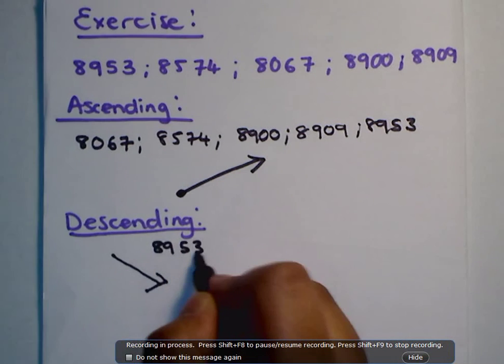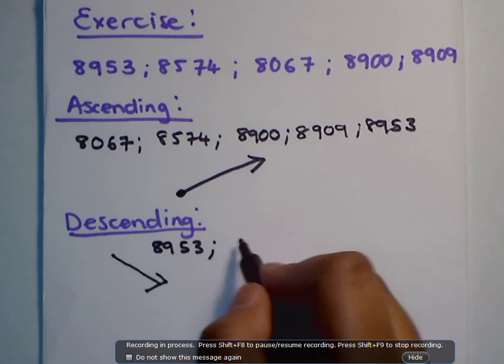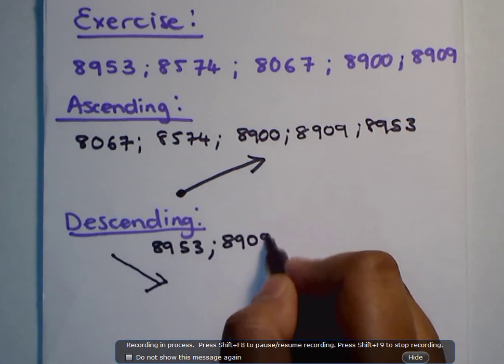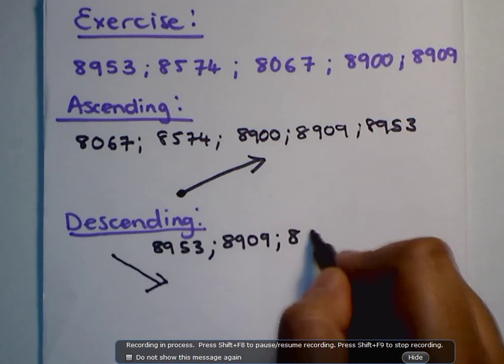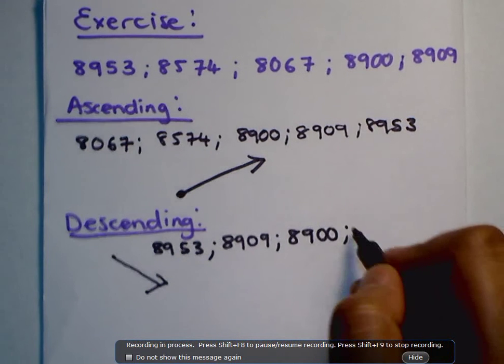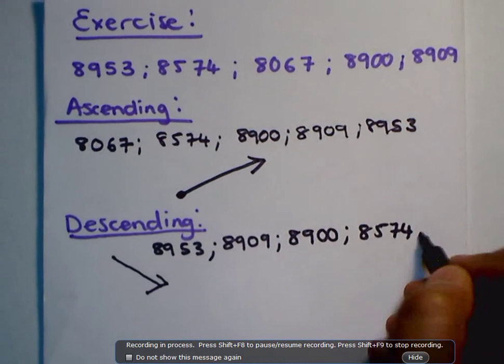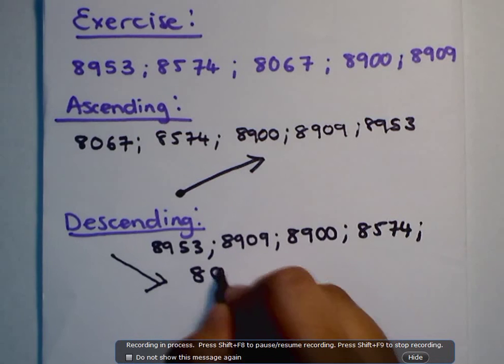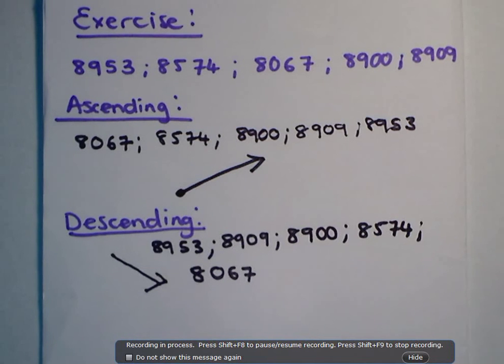8953. Then we have 8909. Then we have 8900. Then we have 8574. And finally, we have 8067. So that's how I went in ascending order and descending order.